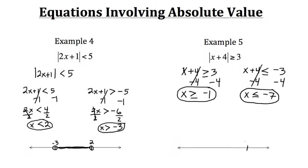So here we have negative 1 and negative 7. x is going to be greater than or equal to negative 1, so since it could be equal we'll have a closed point here and go in that direction. Or x could be less than or equal to negative 7, so we'll have a closed point there too and go in that direction. So that's how you solve inequalities involving absolute values.